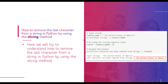Let's get started and discuss our first topic: how to remove the last character from a string in Python using the slicing method. Basically, string slicing is a Python technique for removing the last character from a string, and you can get a substring by using the string slicing function. To extract certain characters from the string, indexing is used.